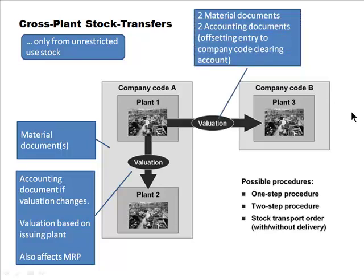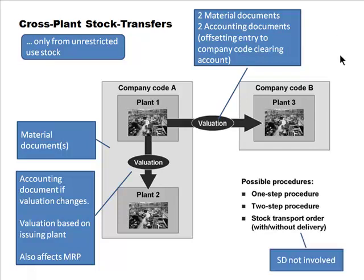When you do company code to company code, this is movement between two different company codes, and therefore there will be two material documents and two accounting documents. The stock is moving from one company code to another, so accounts need to be adjusted properly using what is called a company code clearing account to make the offsetting entries. The clearing account is what balances between the company codes.